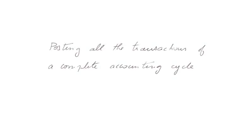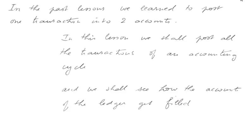In this lesson, we are posting all the transactions of a complete accounting cycle. In the past lessons, we learned to post one transaction into two accounts. Now we shall post all the transactions of an accounting cycle, see how the accounts of the ledger get filled, and distinguish cash and money at the bank.